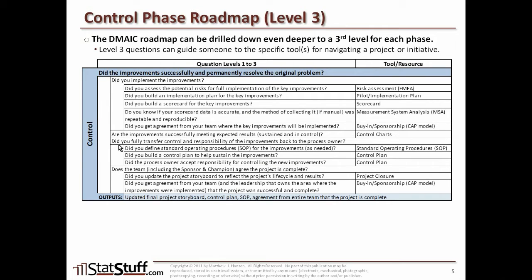Next at the second level, ask: did you fully transfer control and responsibility of the improvements back to the process owner? To answer that, ask a few third-level questions. Did you define the standard operating procedures, or SOPs, for the improvements as needed? We need to build SOPs that define the necessary steps to ensure improvements are defined and sustained. Next, did you build a control plan to help sustain the improvements? And did the process owner accept responsibility for controlling the new improvements? It's not enough just to build a control plan — we need to make sure the process owner has ultimate ownership, accountability, and responsibility for tracking and watching the improvements to ensure they are sustained, and that they agree to and accept all that's defined within the control plan.